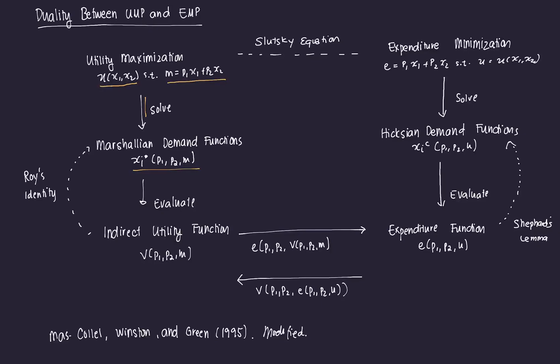Since these are quantities of consumption, we can evaluate our direct utility function to be able to derive the indirect utility function. This is basically V(P1, P2, M) — a re-expression of our direct utility function wherein we plugged in our Marshallian demand for good one and good two, or for the goods that a consumer would opt to consume. We also noted that there's a manner by which we can recover or link the indirect utility function and the Marshallian demand functions.